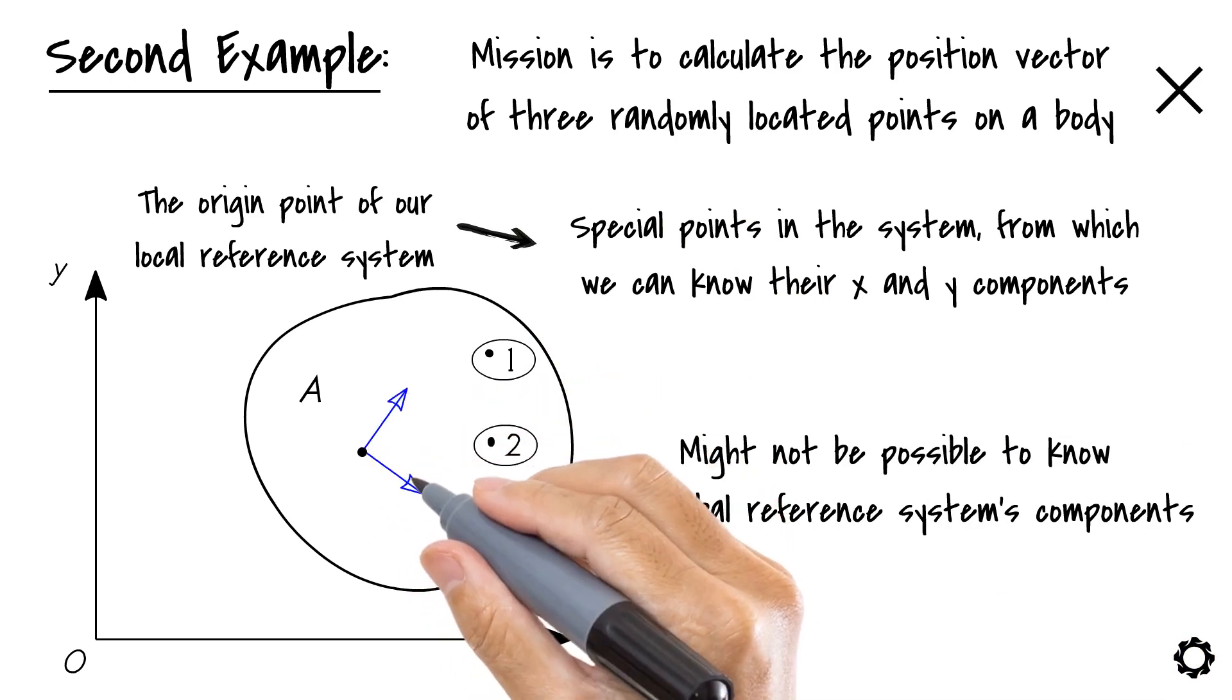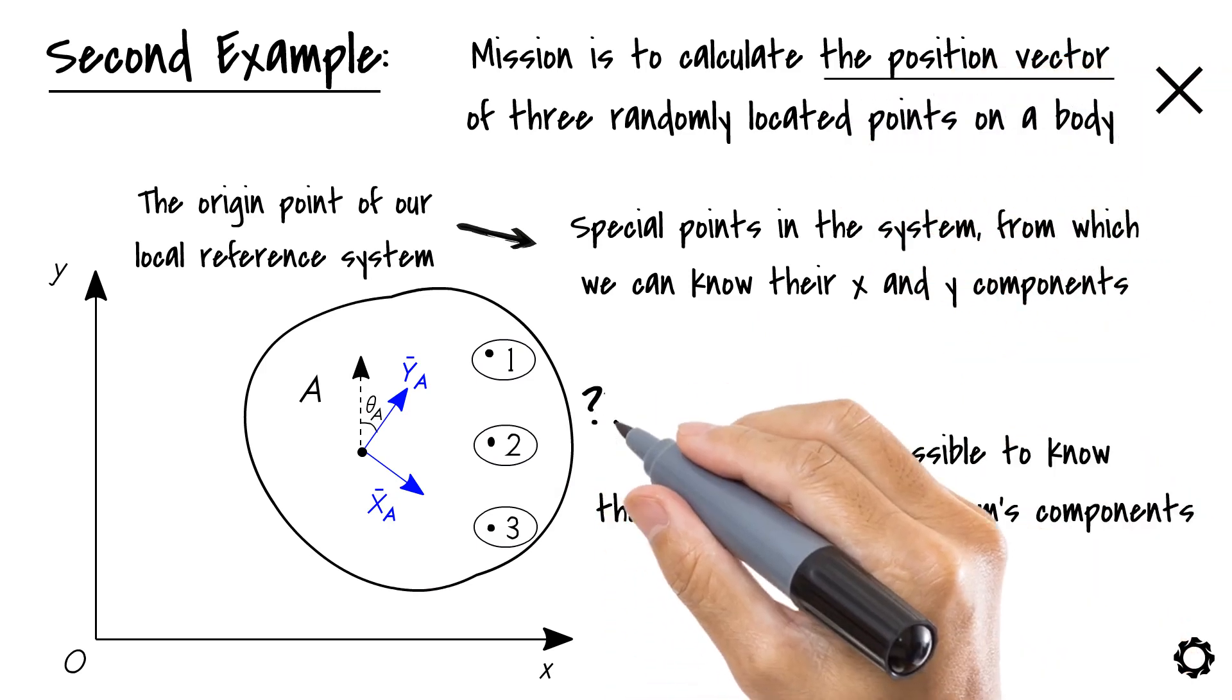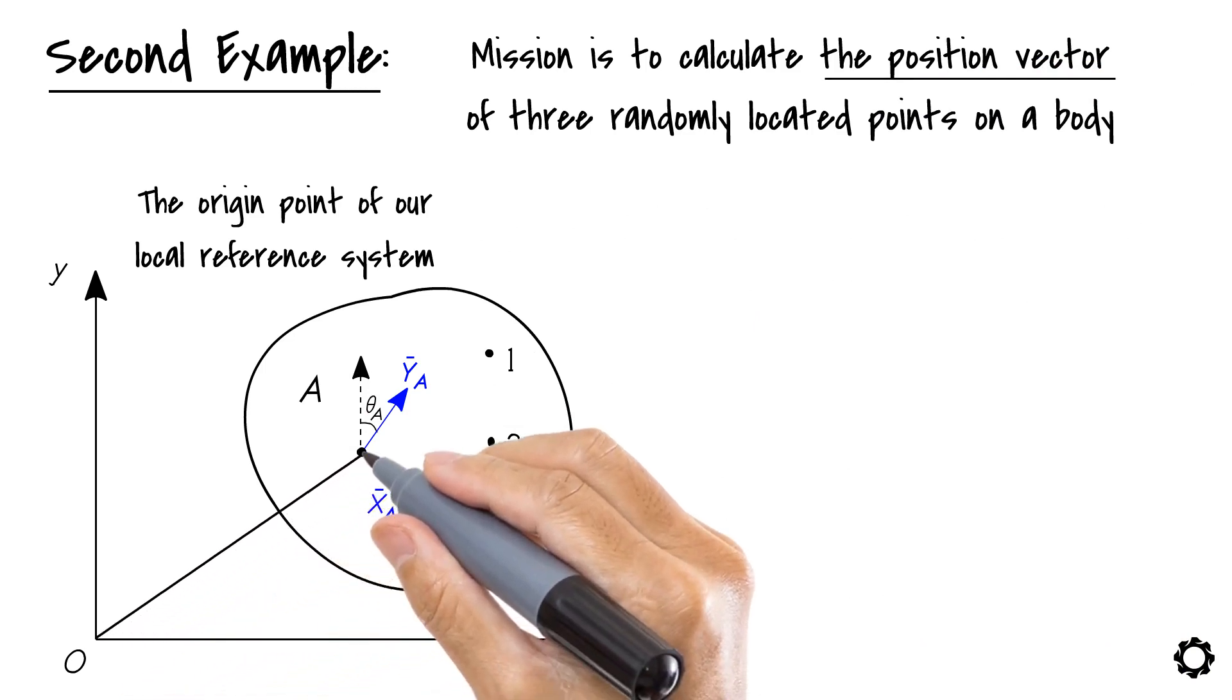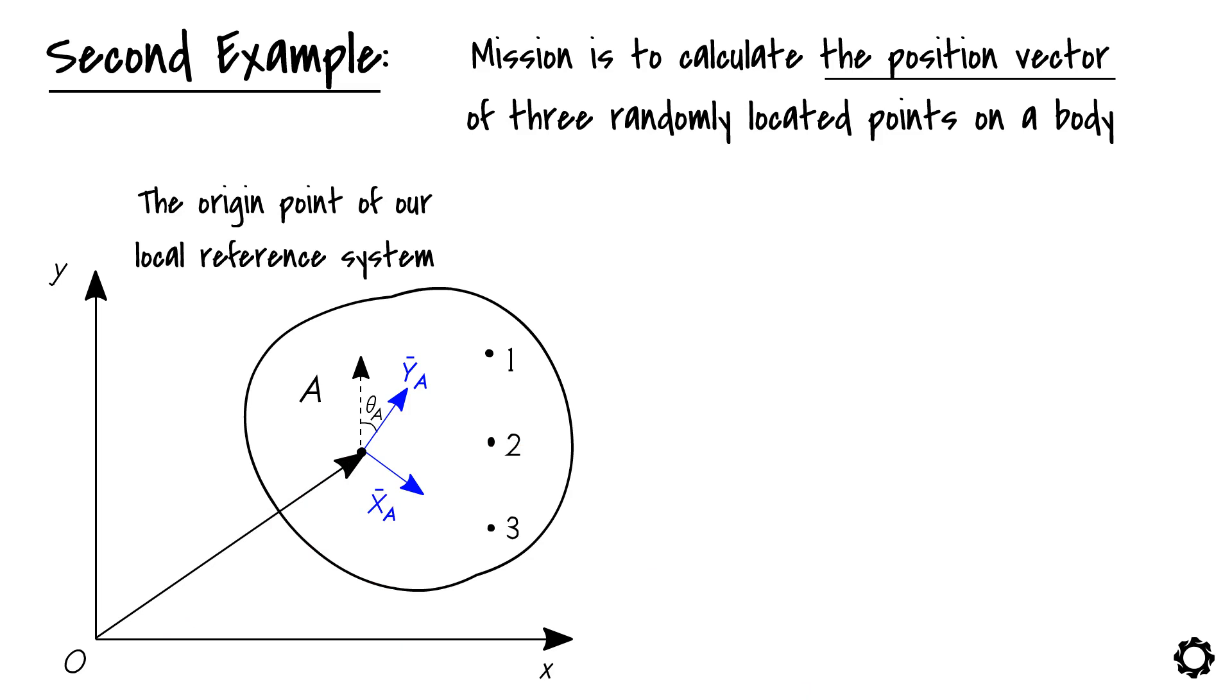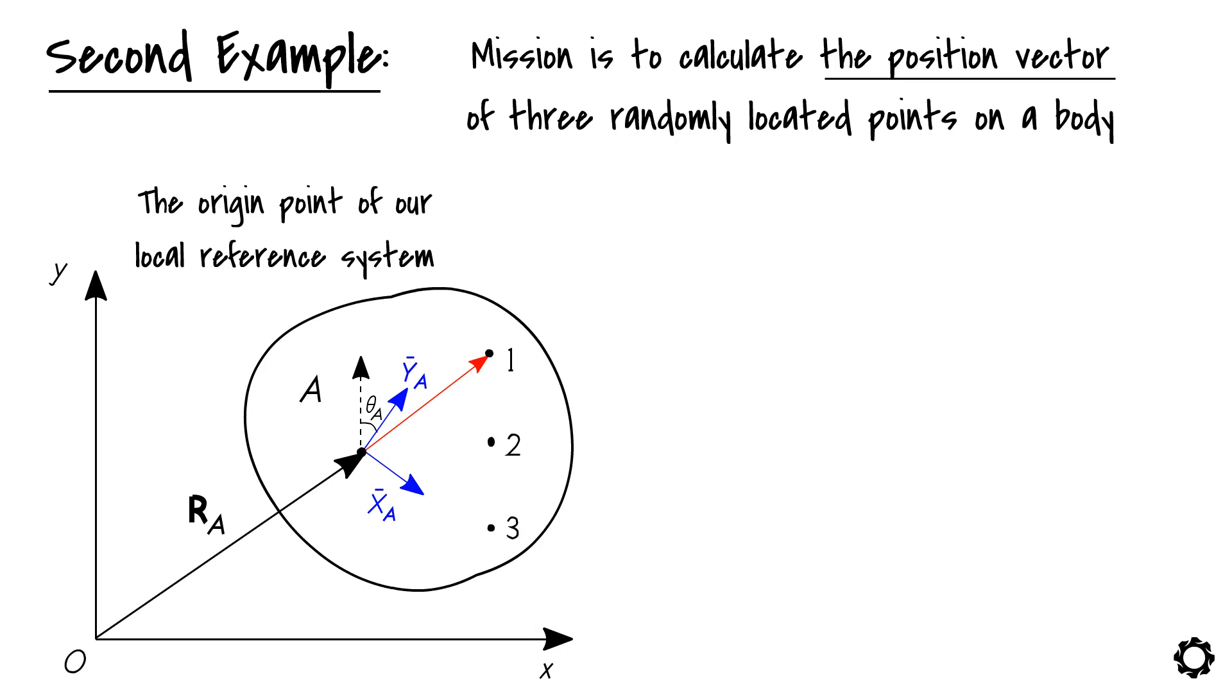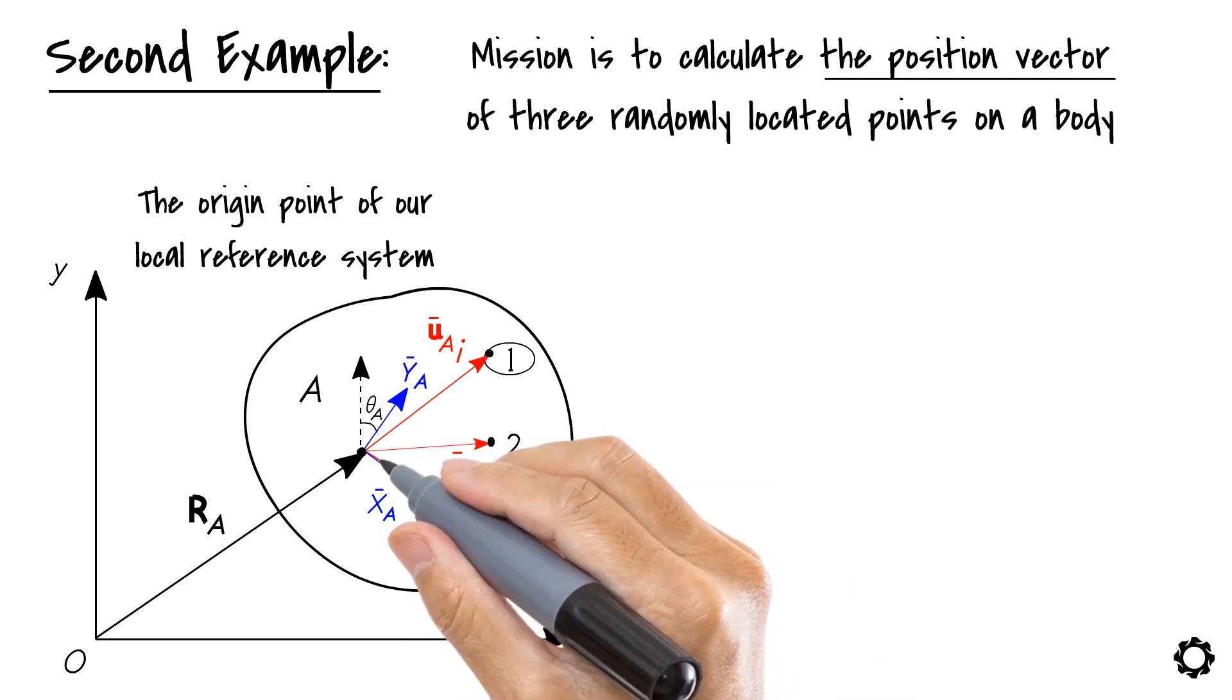Let's also draw this local system. We will call the axis of this local system x bar A and y bar A, and they may or may not have the same orientation of the frame reference system's axis. How do I construct the position vector of these three particles then? Well, first I'm going to draw the position vector of the origin of the local reference system with respect to the global reference system. This vector that I am going to call R A. Now I will draw a second position vector, but this time it is the position vector of the point with respect to the origin of the local reference system. I will also give it the name of u bar A i, where i is the particle number.